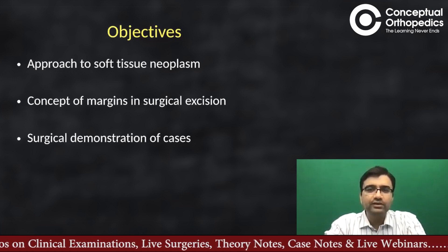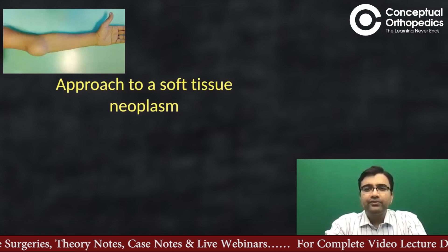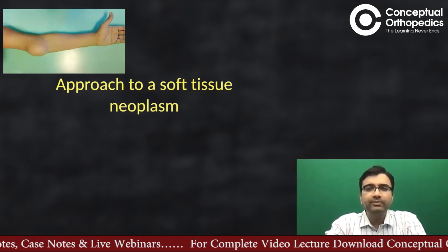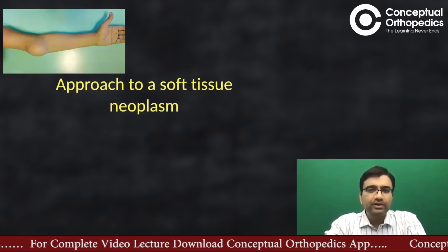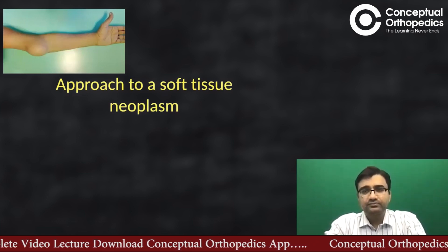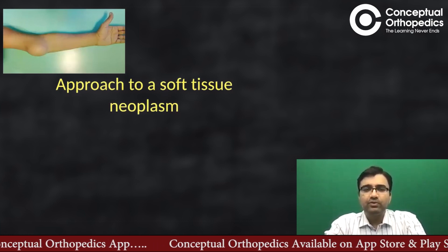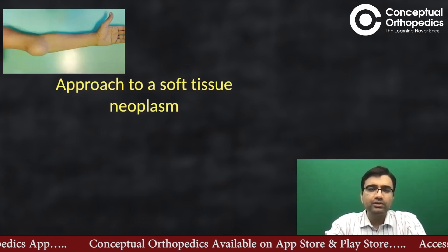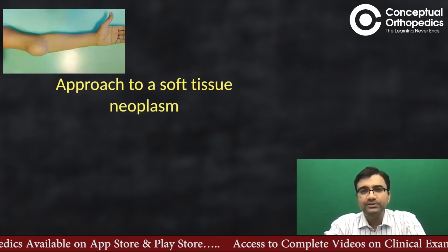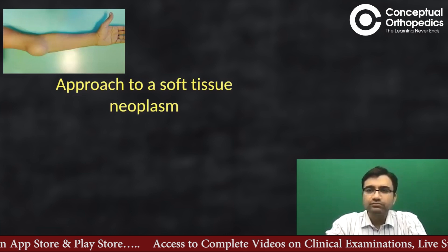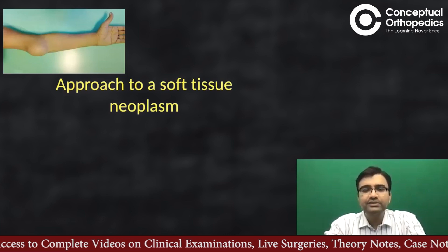Normally we have the habit that whenever we see a swelling, we directly jump in to operate. That should not be the approach. You should always diagnose it first — what are you dealing with? Is it a benign tumor, a malignant tumor, a vascular tumor, a vascular malformation, or a traumatic mass like myositis? There can be different etiologies.